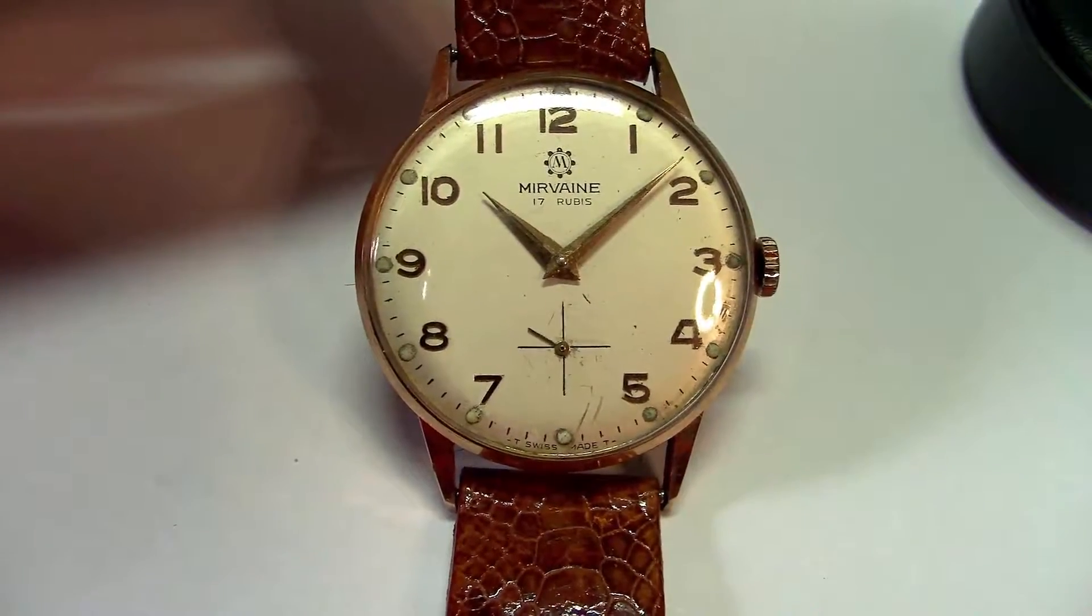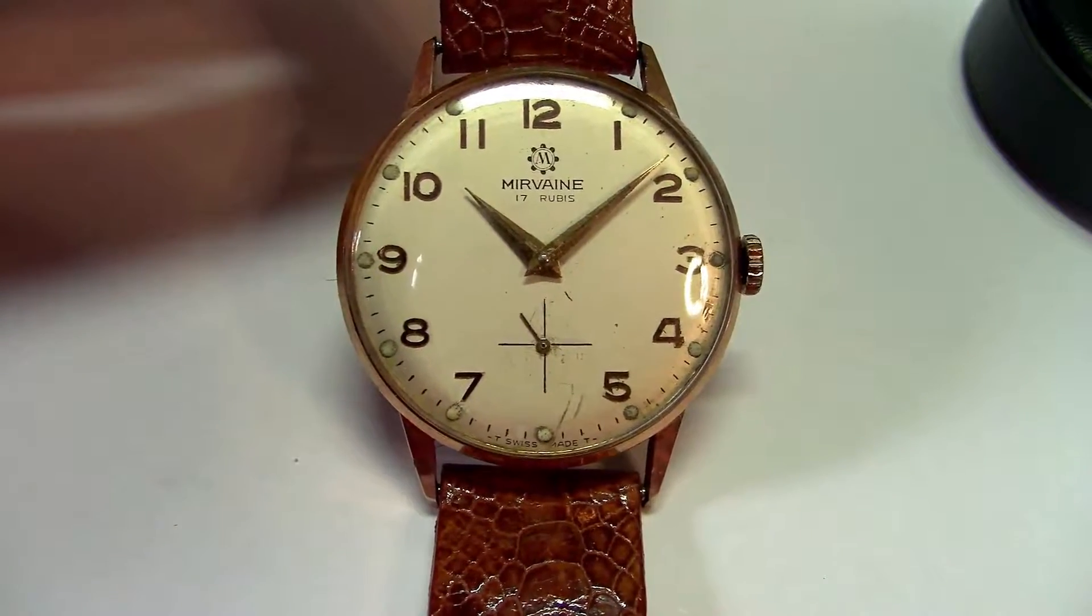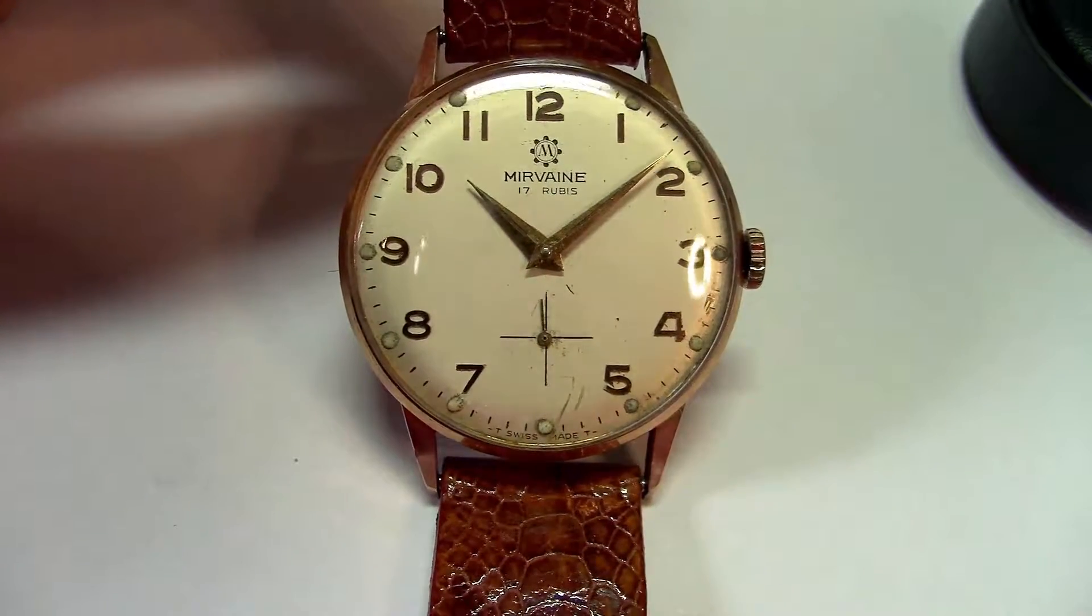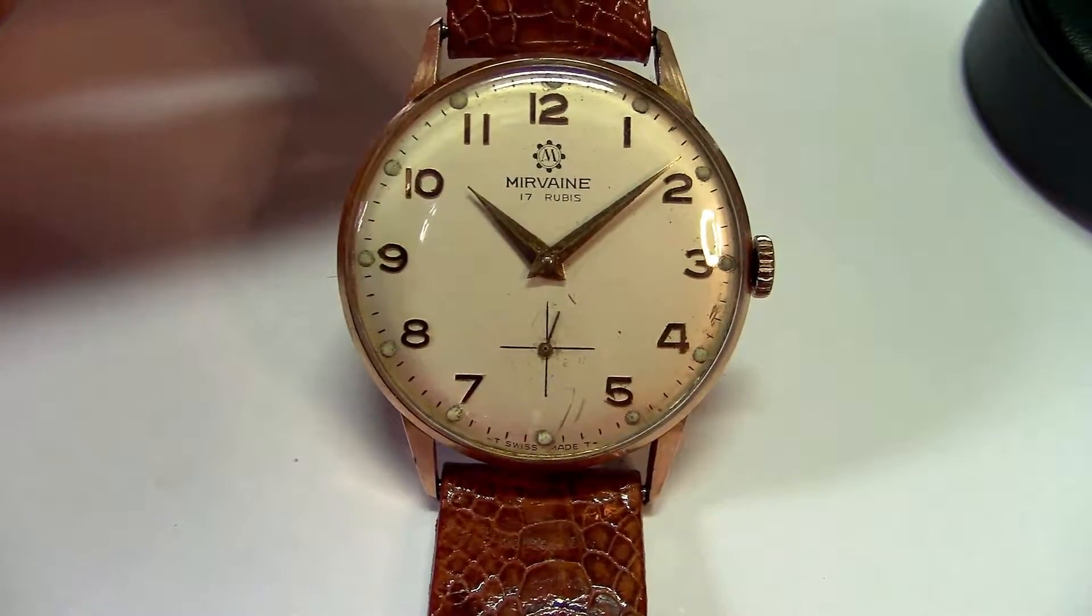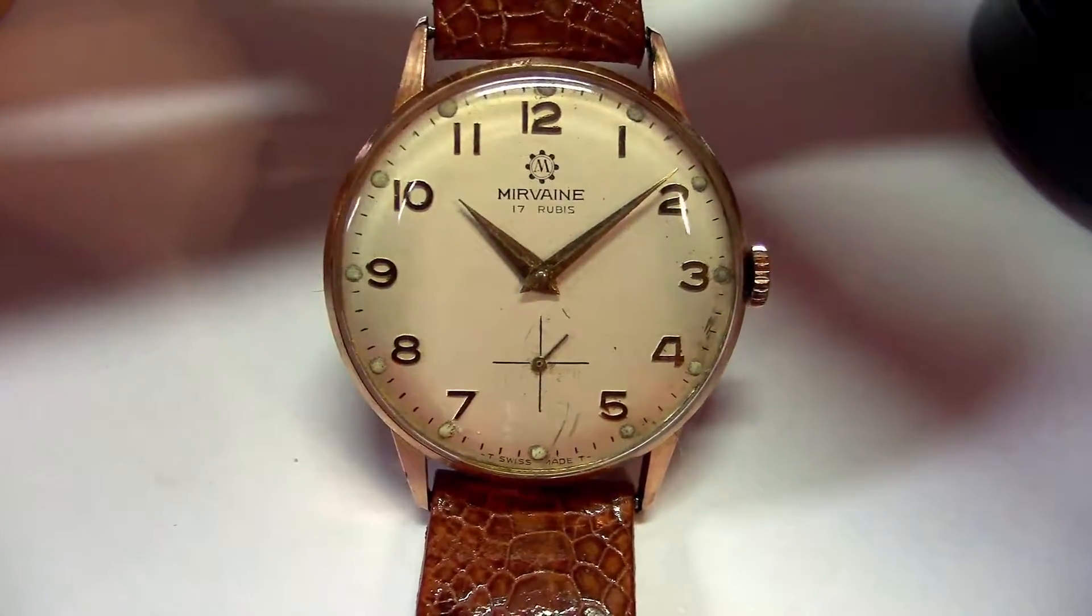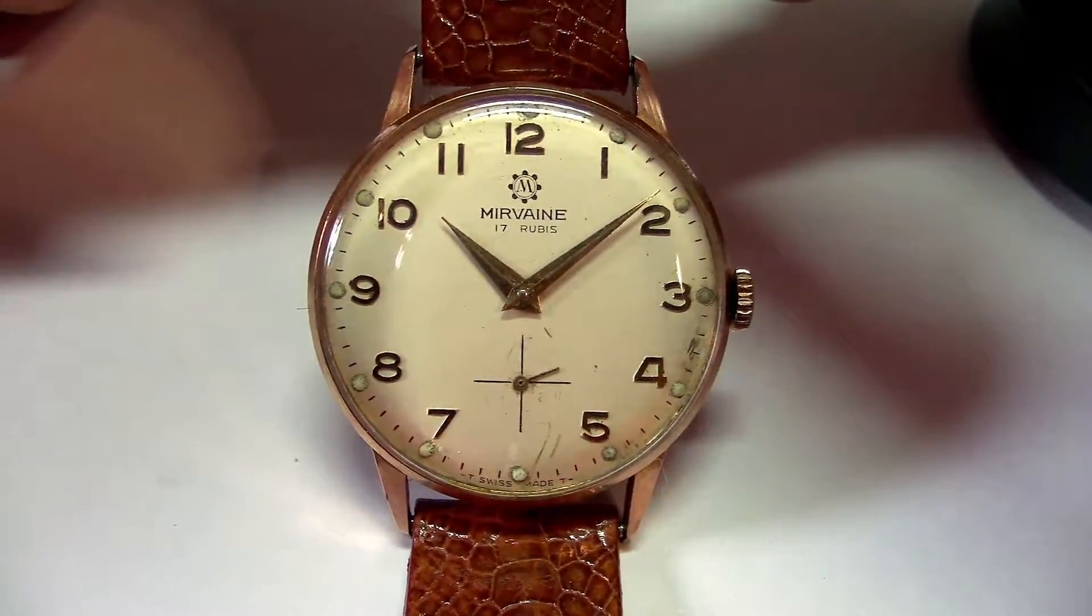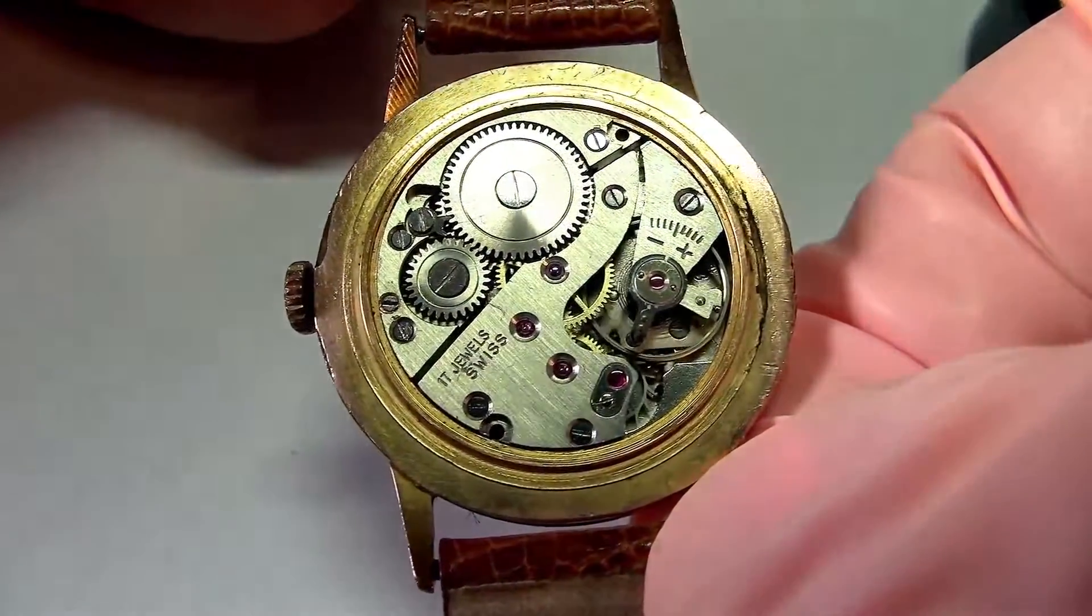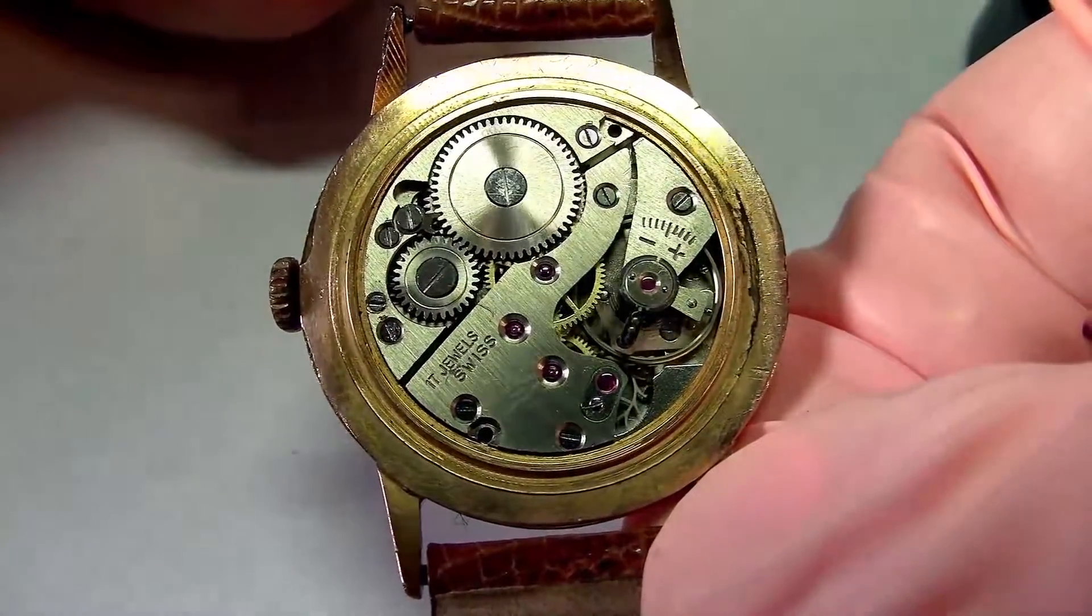So what we have here is a very simple watch. It's a Mirvain. It's a Swiss watch with a hand-wound movement, 17 jewels with a sweep seconds at 6 o'clock. And I choose this watch because it's simple enough, but also complete enough so I can show you the simplest and also the most practical way how it works.